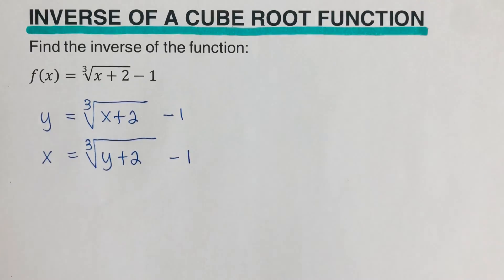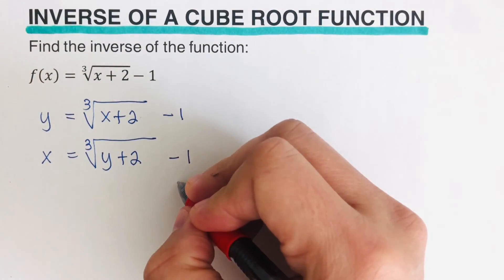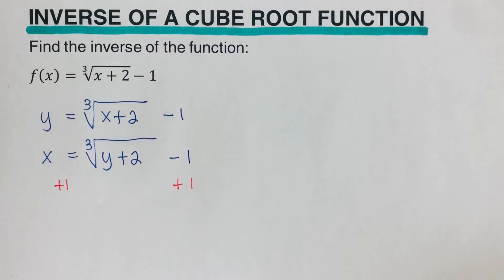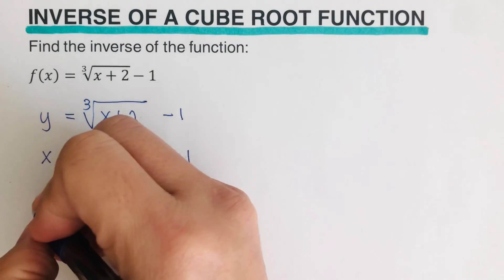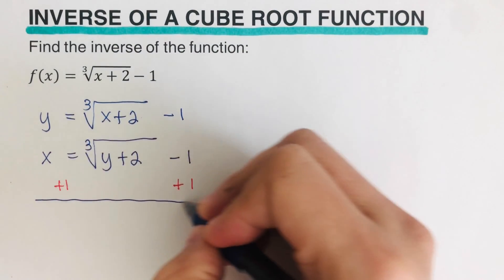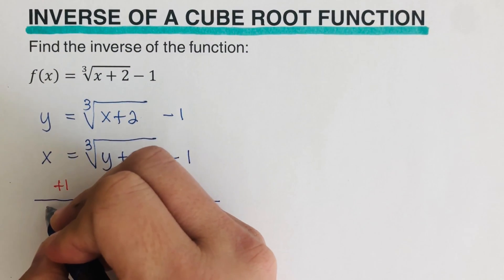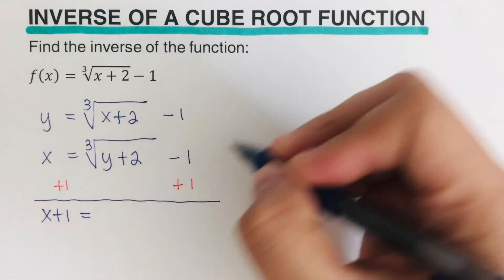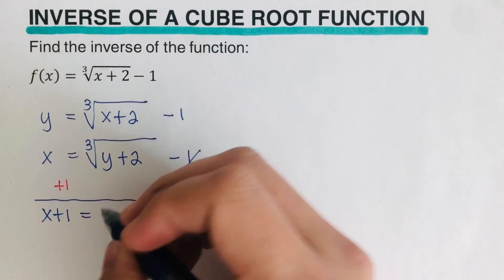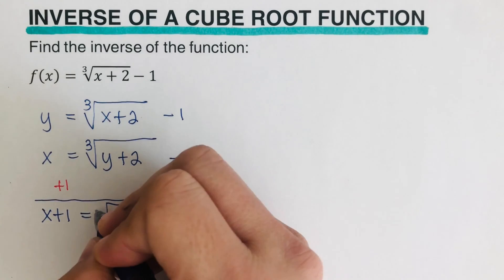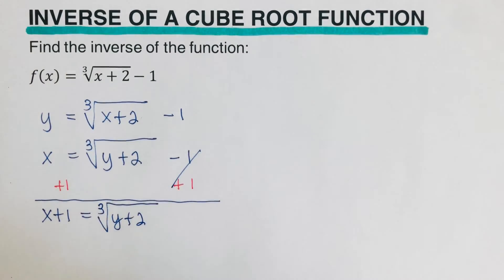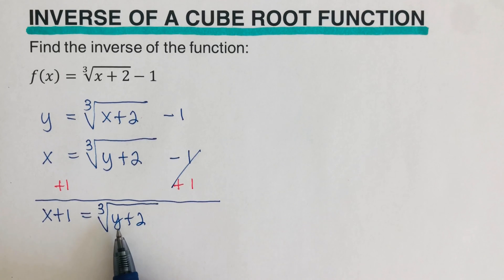We can go ahead and add 1 to both sides, plus 1. So we can rewrite this as x plus 1 equals the cube root of y plus 2. Our target is to have y by itself on the right side.